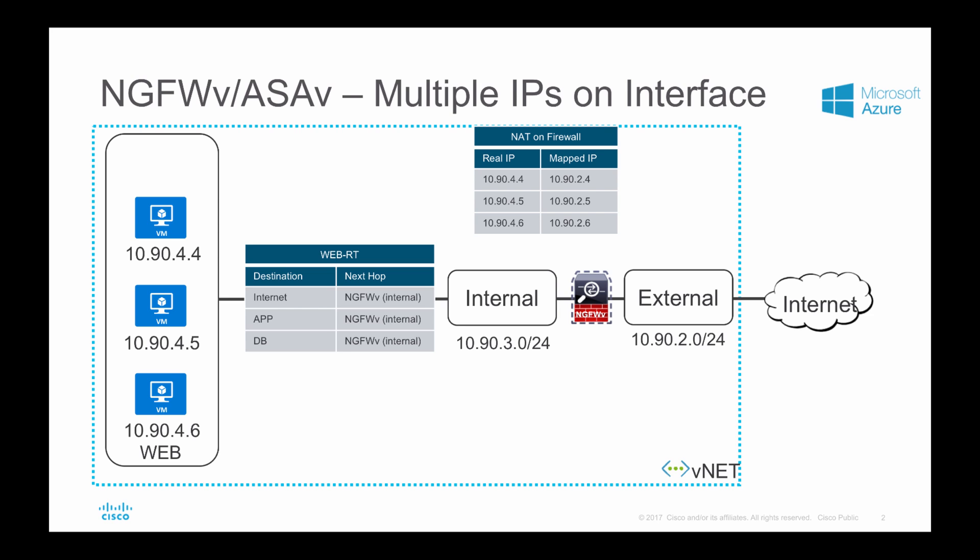When you deploy this kind of environment in your data center or private cloud, the moment you add a static translation on your firewall, your firewall starts proxy ARPing for that new IP address. But that is not the case in public cloud — you need to perform a few additional steps in order to make this design work.